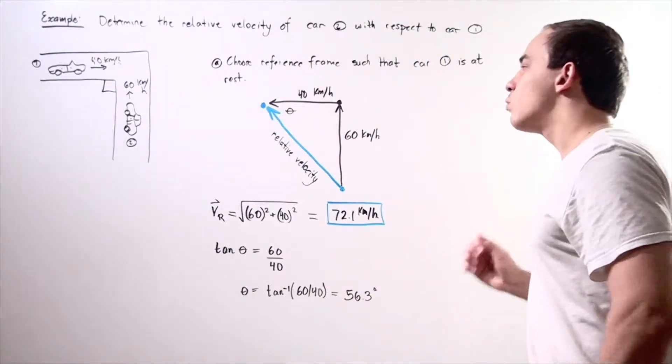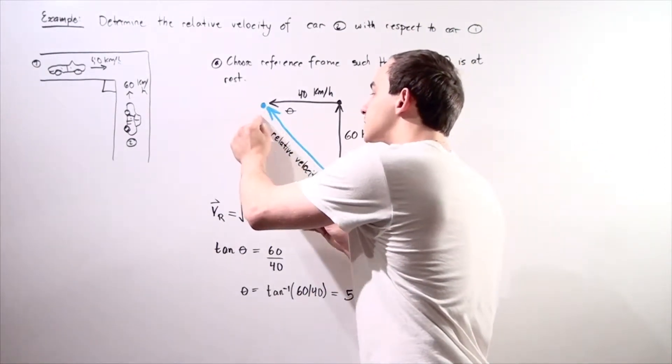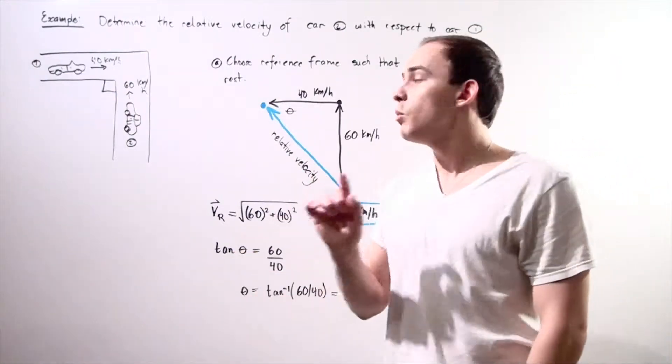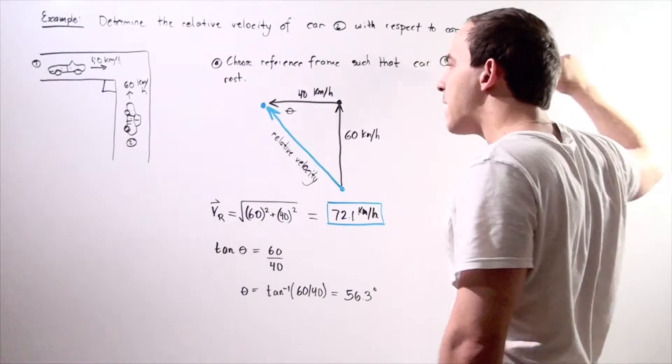So we want to find what the magnitude of this side is, our relative velocity, and we want to find our direction so we want to find what the value of the angle is with respect to our x-axis.